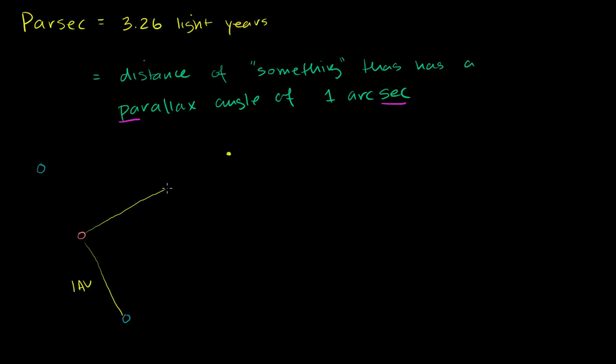And what we want to do is figure out the distance of this object. And all we know is that it has a parallax angle of one arc second. So let's remind ourselves what this means.